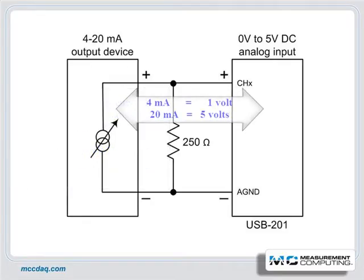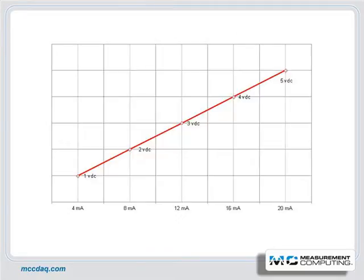When your transducer outputs 4 milliamps, the USB 201 will register 1 volt, and when your transducer outputs 20 milliamps, the USB 201 will register 5 volts. The data in between will be linear throughout the entire range.